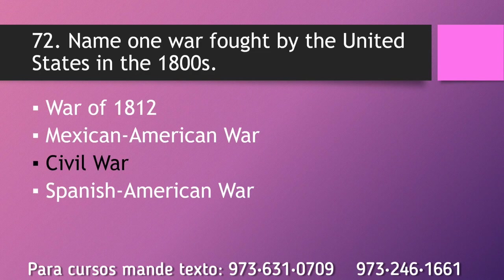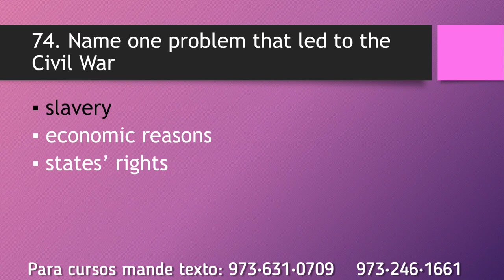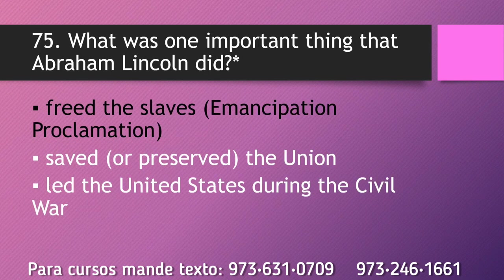Name one war fought by the United States in the 1800s. Civil War. Name the U.S. war between the North and the South. The Civil War. Name one problem that led to the Civil War. Slavery. What was one important thing that Abraham Lincoln did? Freed the slaves.